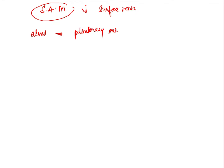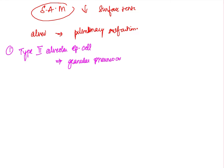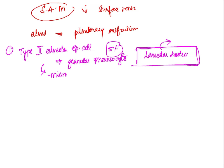The pulmonary surfactant decreases the surface tension of the alveolar membrane. It is secreted from two types of cells. First are the type 2 alveolar epithelial cells, which are present for about 5 percent of the epithelial cells. These are also called granular pneumocytes. These cells have a characteristic feature — the presence of microvilli on their alveolar surface, and they contain lamellar bodies which store the surfactant, releasing it into the alveolar epithelium.